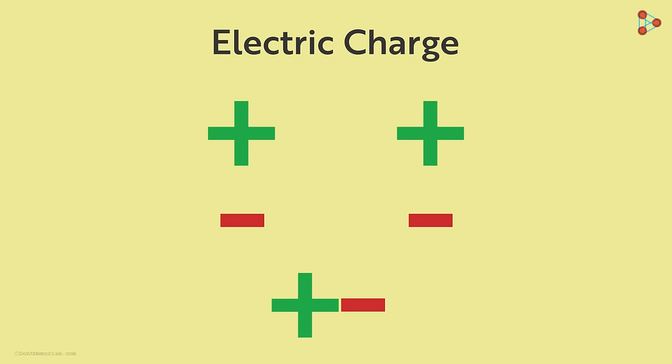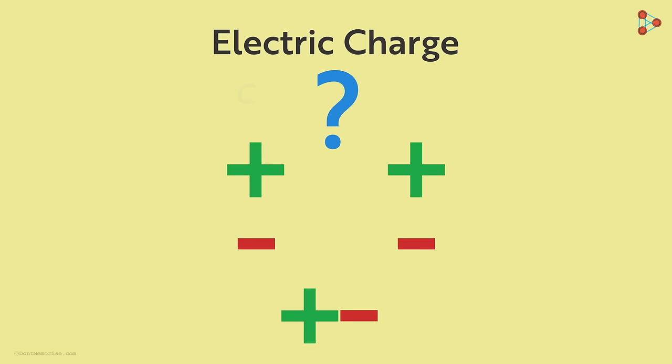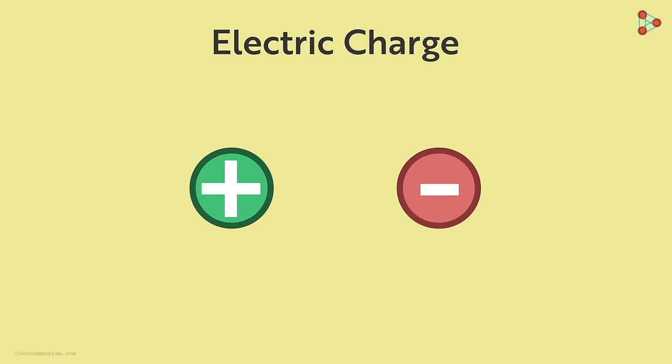But what exactly is charged? Or in other words, who actually carries these charges? Well, these charges are carried by tiny particles with incredibly small mass. They are called subatomic particles. The positive charges are carried by particles called protons, while negative ones are carried by particles called electrons.